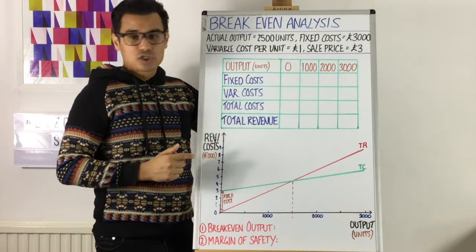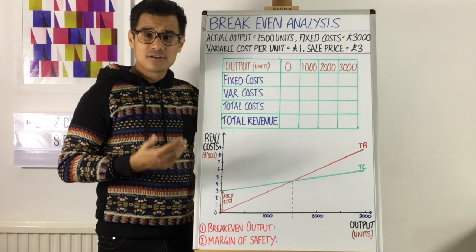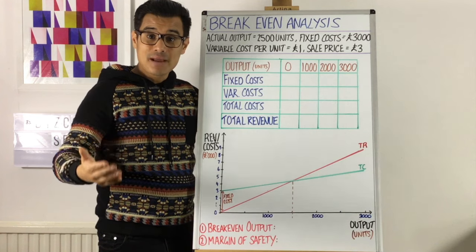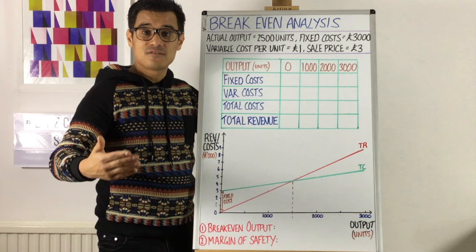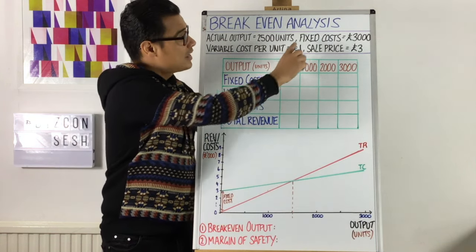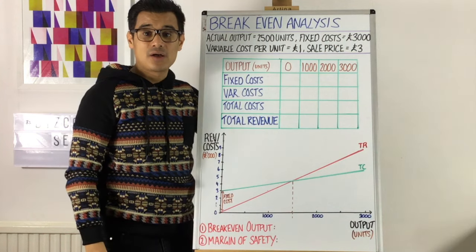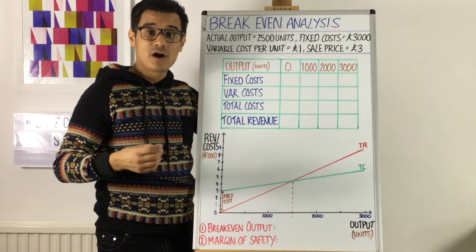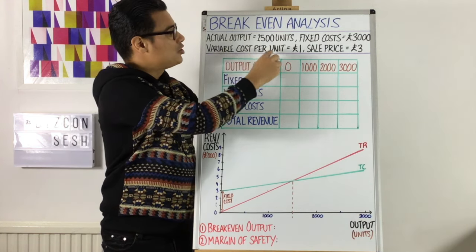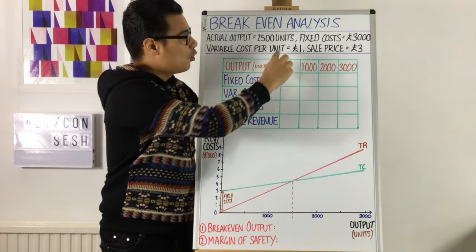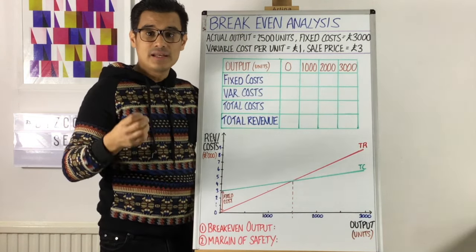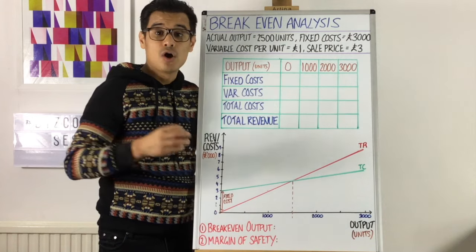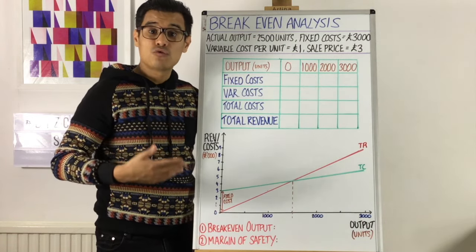You may be given the actual output. So the actual output here is 2,500 units. So that suggests that this company, this business, produces 2,500 things, 2,500 units. That's its output. It's got fixed costs of £3,000. So remember fixed costs are those costs that do not vary with output. And it's got a variable cost per unit of £1. So every unit this company makes, it costs £1 in variable costs and a sale price of £3. So it's selling its products for £3.